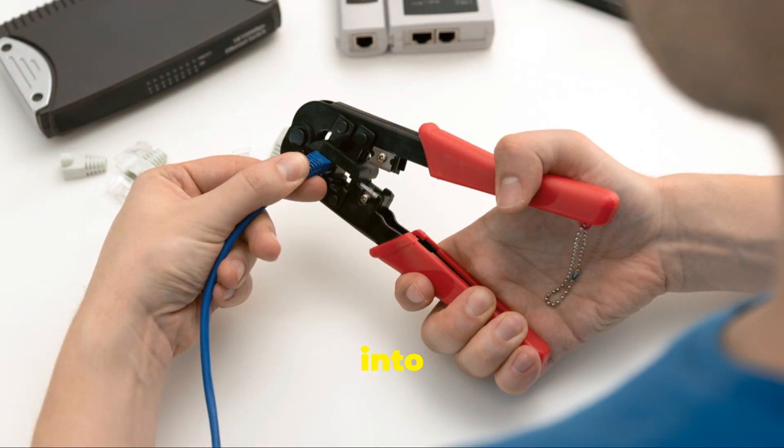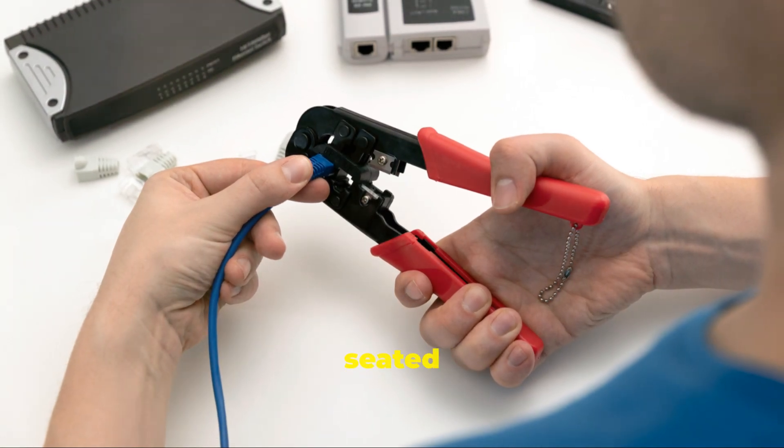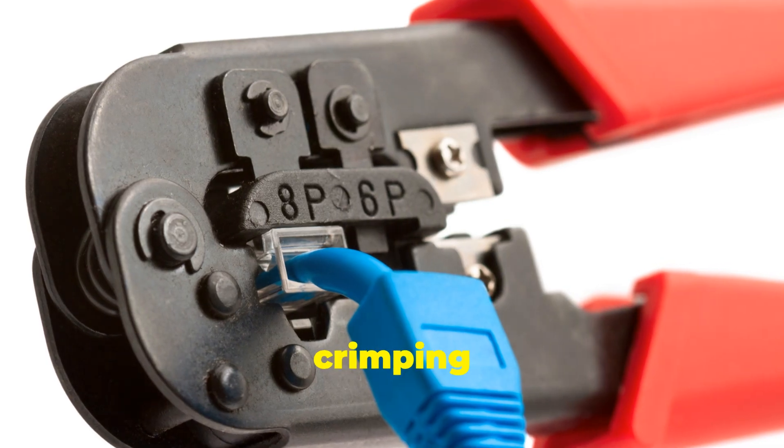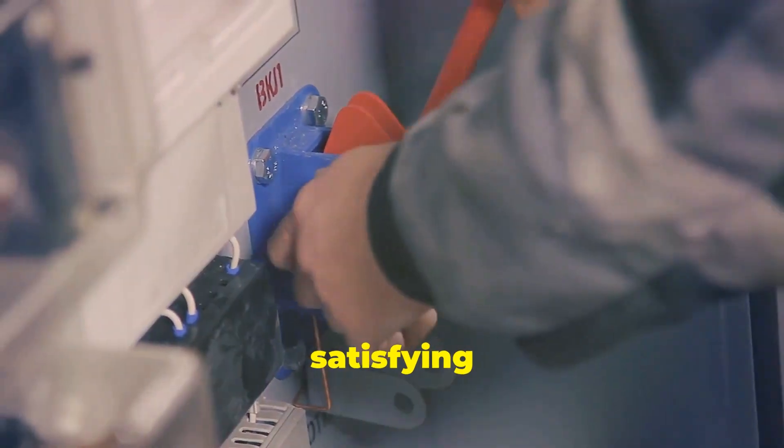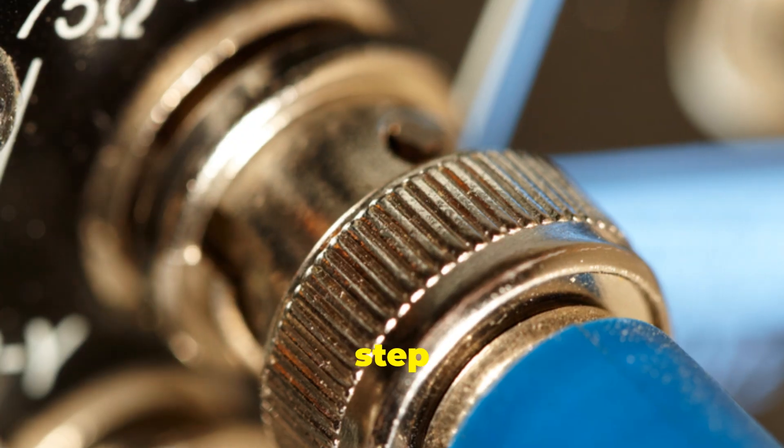Slide the connector into the crimping tool, making sure it's seated properly. Squeeze the crimping tool handles firmly to crimp the connector onto the cable. You should hear a satisfying click when it's done. This step ensures a secure connection between the wires and the connector. Don't be shy—give it a good squeeze.